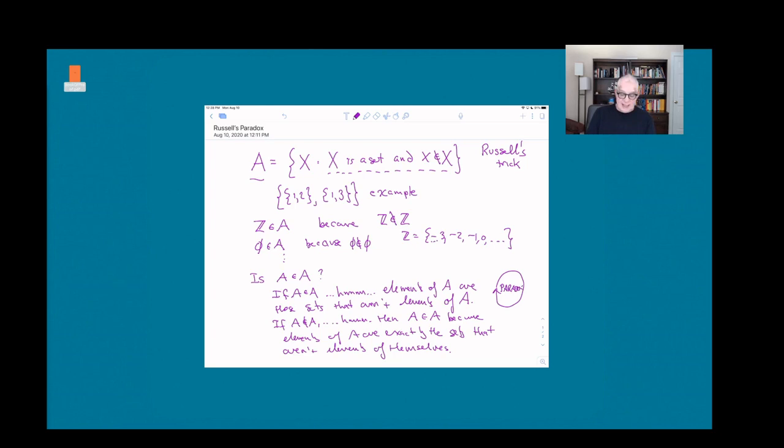When Frege got this letter from Russell, he kind of panicked because his logical system was of no use to anybody if it had this kind of circular reasoning in it. And after thinking about it for a while, he realized that this was a fundamental problem. It wasn't easy to fix.